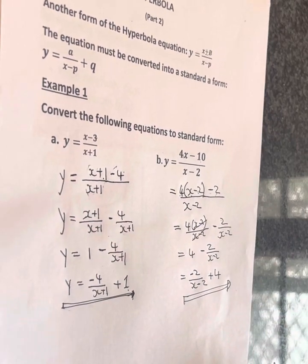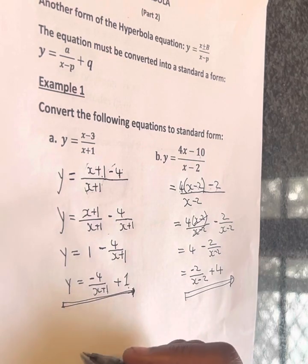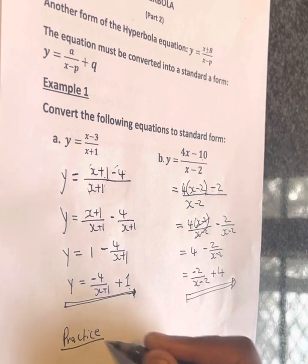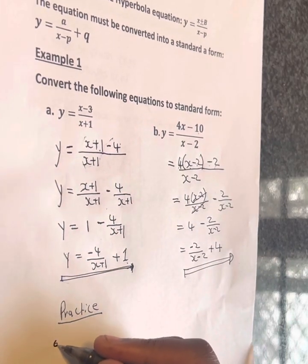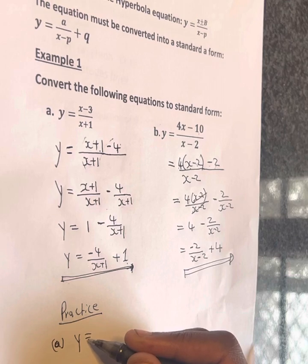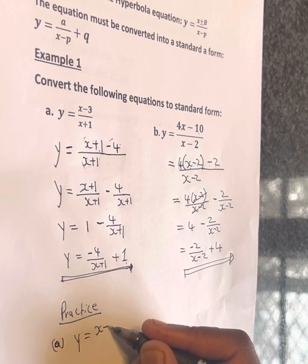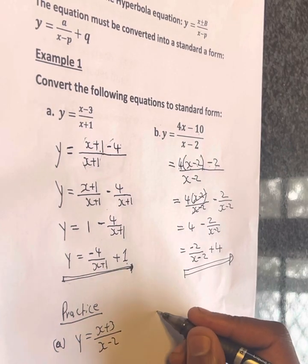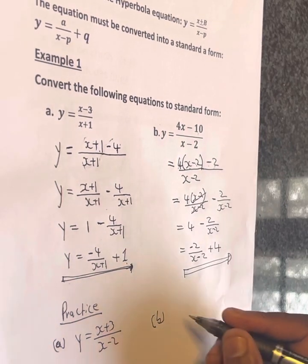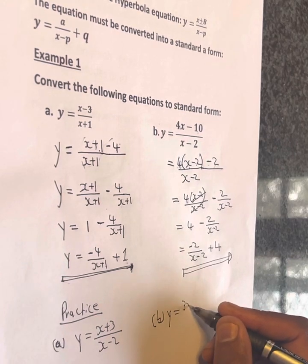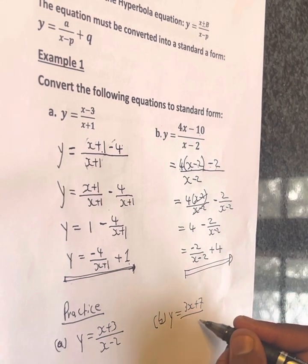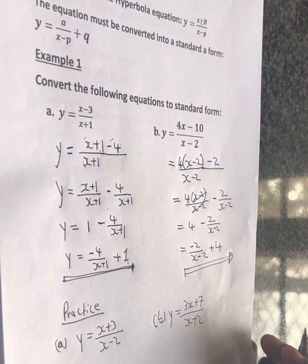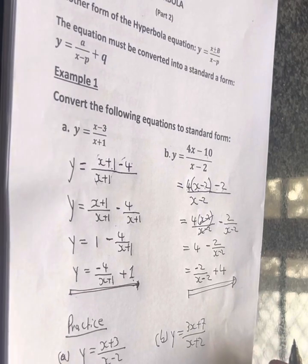So for practice, you can see how it is. For example, x plus 3 over x minus 2, and then y equals 3x plus 7 over x plus 2. I'll see you in the next video.